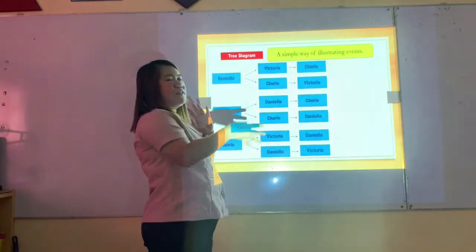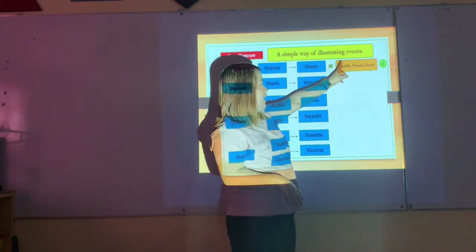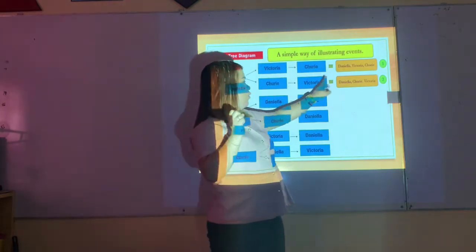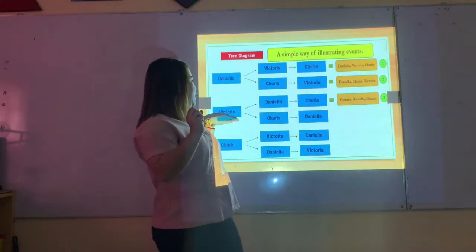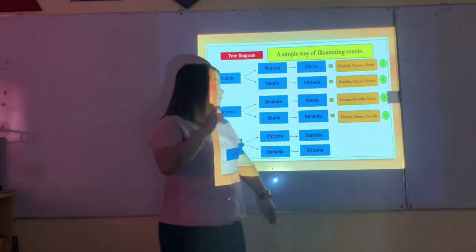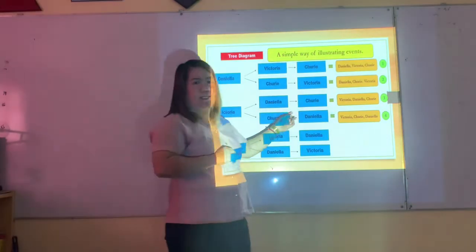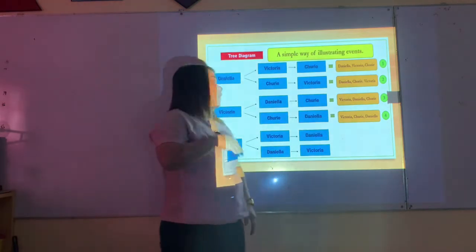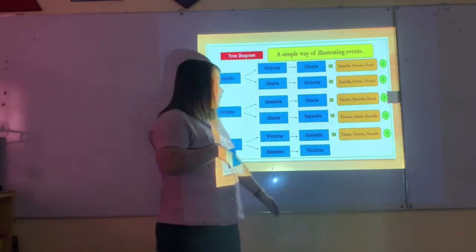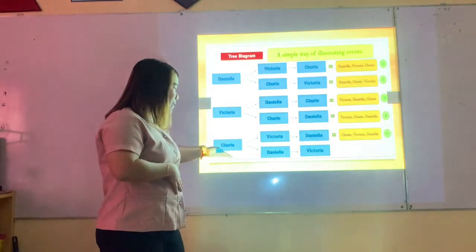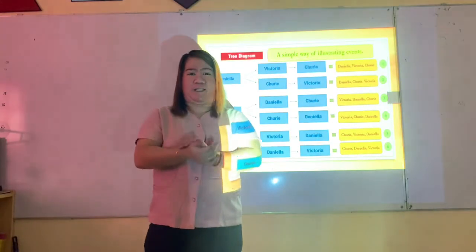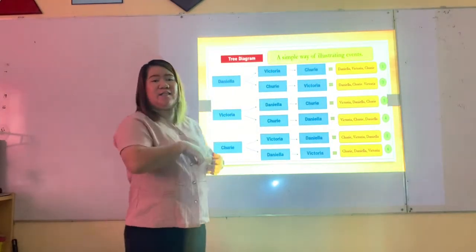Listing the arrangements from the tree diagram: (1) Daniela-Victoria-Charlie, (2) Daniela-Charlie-Victoria, (3) Victoria-Daniela-Charlie, (4) Victoria-Charlie-Daniela, (5) Charlie-Victoria-Daniela, (6) Charlie-Daniela-Victoria. All in all, we have six possible ways — the same answer as systematic listing.